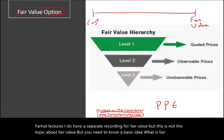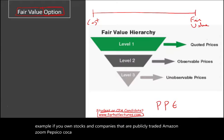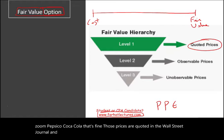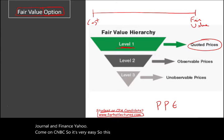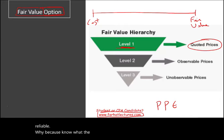But you need to know a basic idea: what is fair value? For example, if you own stocks in companies that are publicly traded — like Amazon, Zoom, PepsiCo, Coca-Cola — those prices are quoted in the Wall Street Journal, Yahoo Finance, and on CNBC. So it's very easy. This is level one, and this is the most reliable, because everyone knows what the price is and everyone agrees on the price.